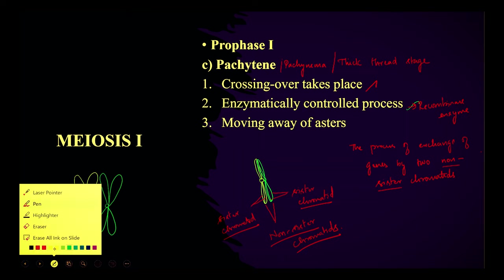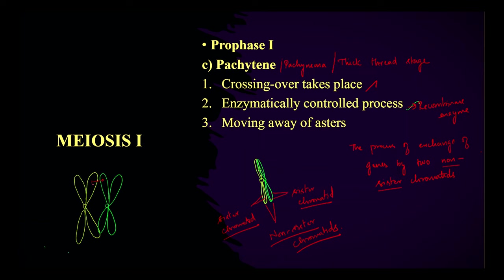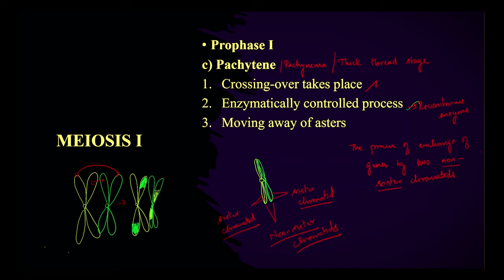During crossing over, one chromatid gets attached with the other and vice versa. At the end of crossing over, the genes get transferred — genes from one chromosome are transferred to the other and vice versa. This whole structure is called a bivalent, also called a dyad. When combined for crossing over, it is called a tetrad.